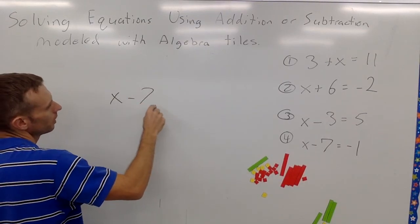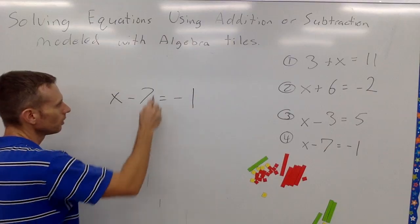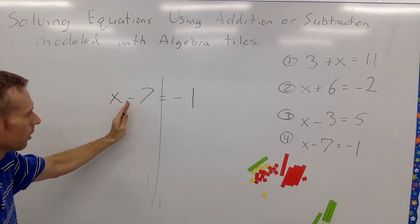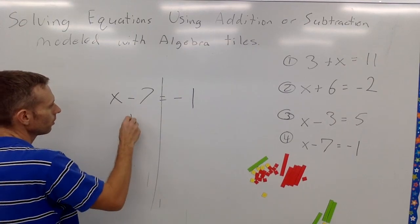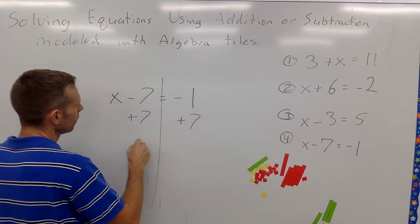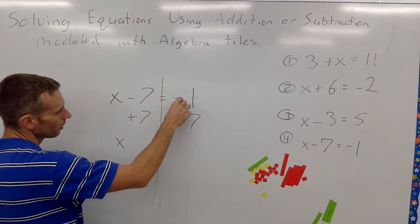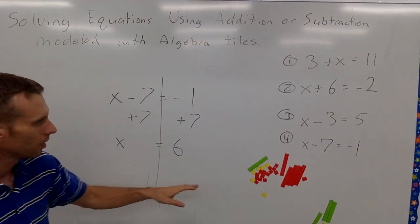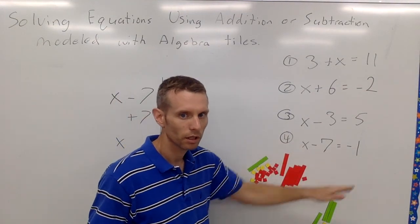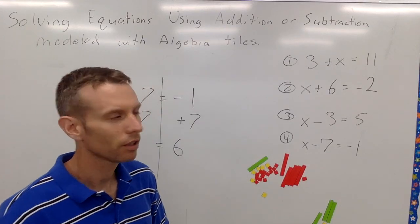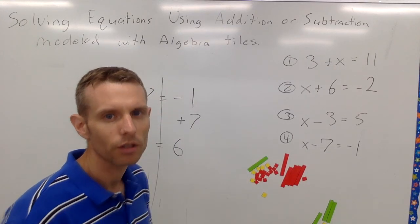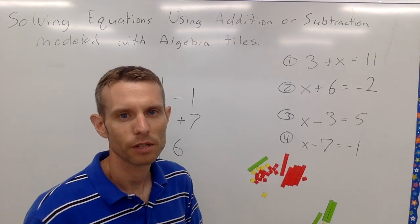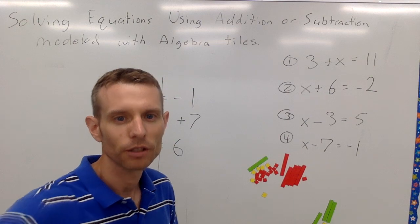Last one: X minus 7 equals negative 1. I'll draw my line. X is attached through minus 7, so I add 7 to both sides to get X by itself. X equals negative 1 plus 7, which is 6. Check: 6 minus 7 is negative 1 — negative 1 equals negative 1 ✓. So there you have it — solving one-step equations involving addition and subtraction, modeled with algebra tiles. Thanks for watching!